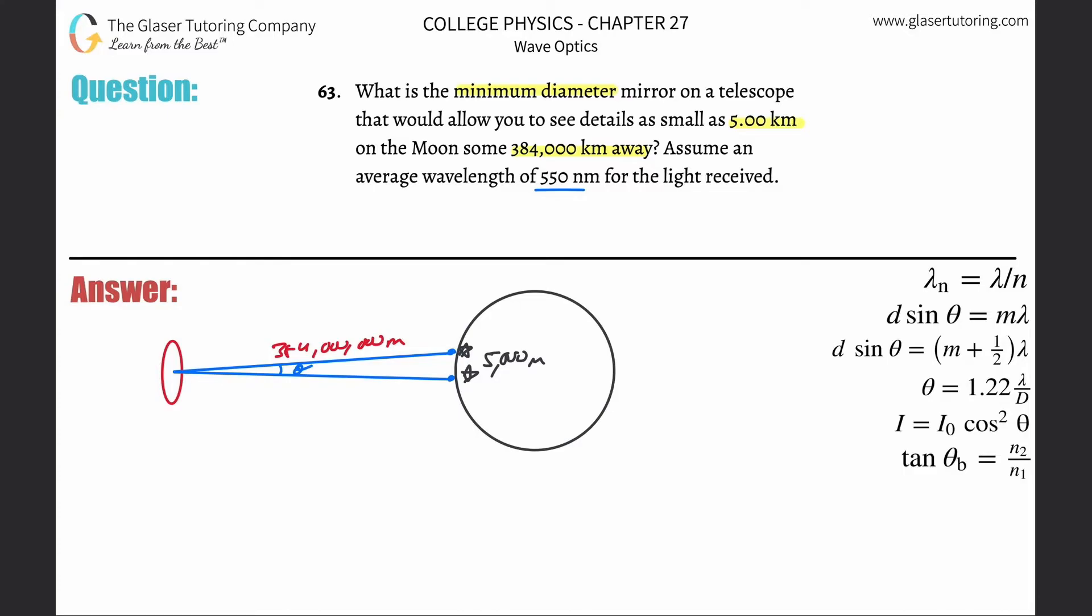So what do we need to figure out? We need to figure out the minimum diameter mirror. According to this formula, we need to find D. We have theta equals 1.22 times the wavelength divided by D. Solve this for D - just cross multiply, theta goes down to the bottom. Notice we don't have theta, that's what we need.